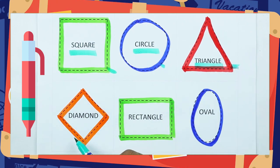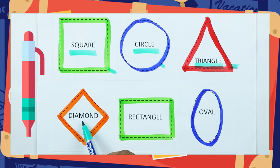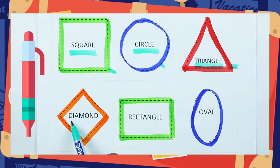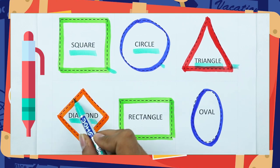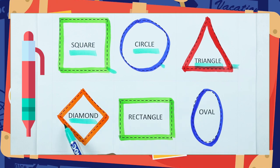Which shape is this? Diamond. D-I-A-M-O-N-D. It's a diamond, with orange color.